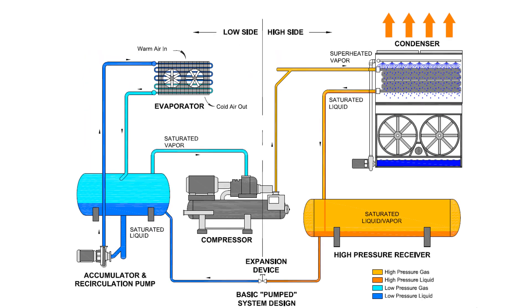In this variation, the air cooling evaporator is supplied by a recirculator pump, often located a long distance from the evaporator. This configuration is referred to as a pumped overfeed or recirc evaporator.